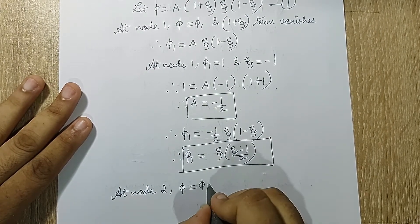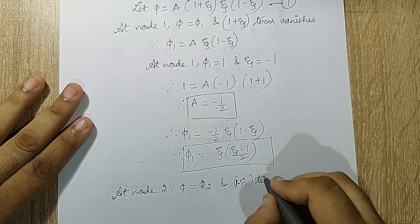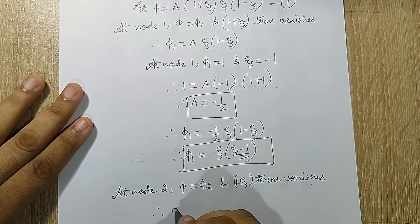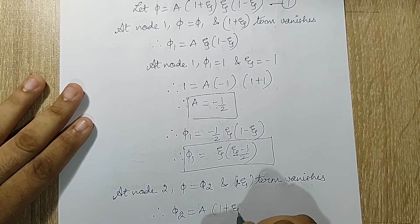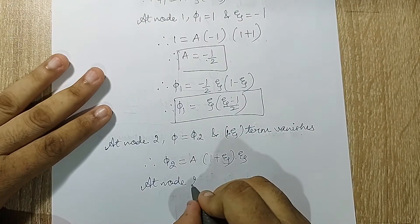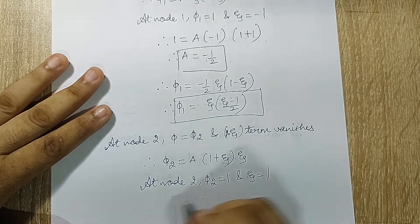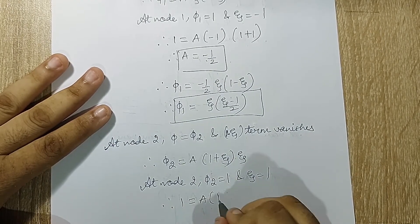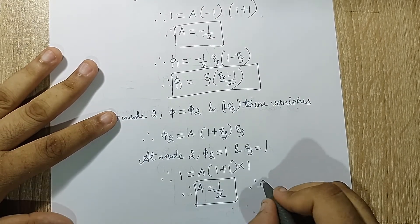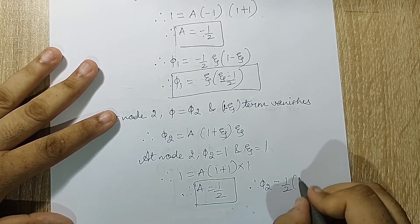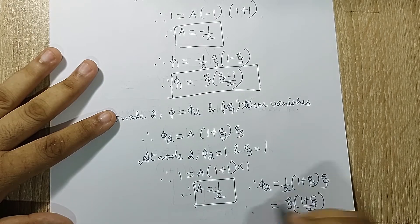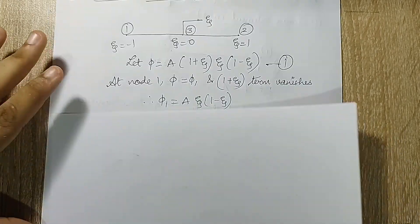At node 2, φ = φ₂ and the term ζ vanishes, so φ₂ = a·(1 + ζ)·(1 - ζ) — wait, the ζ term from node 2 vanishes, giving φ₂ = a·(1 + ζ)·ζ. At node 2, φ₂ = 1 and ζ = +1, so 1 = a·(1 + 1)·1 = 2a, giving a = 1/2. Therefore φ₂ = ζ·(1 + ζ)/2.